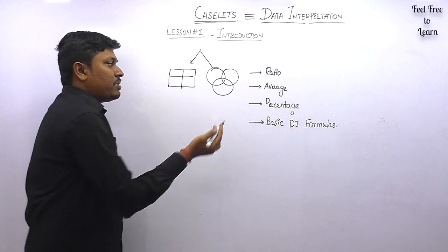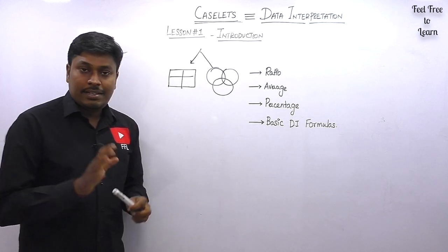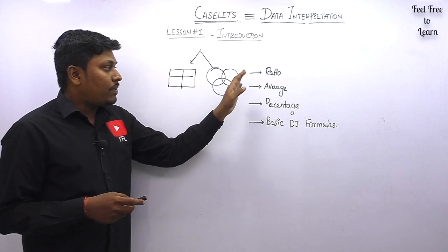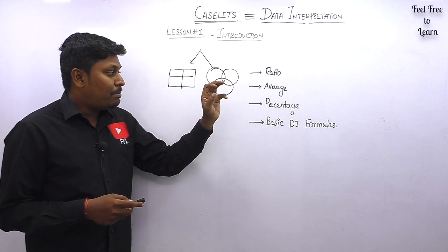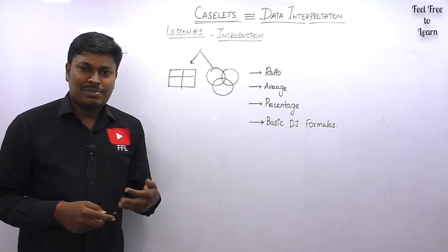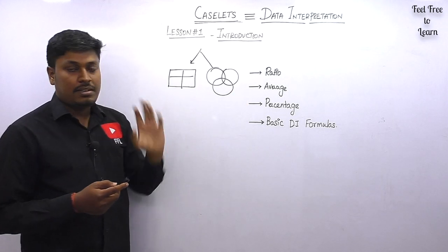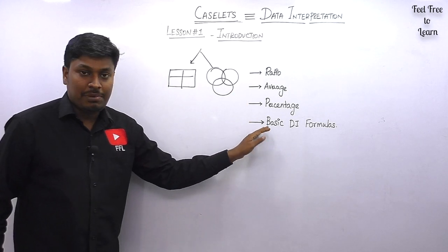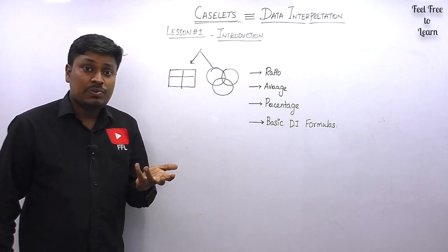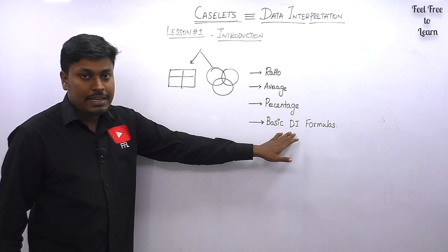In caselet, there are only two chart types: a table chart and a Venn diagram. Based on the question, you solve using one of these. Before solving caselet questions, you should know some basic concepts: how to find ratios, averages, percentages — for example, 25% of 750 or 80% of 900 — and basic DI formulas like 'x is what percentage of y' or 'x is what percentage more or less than y.'